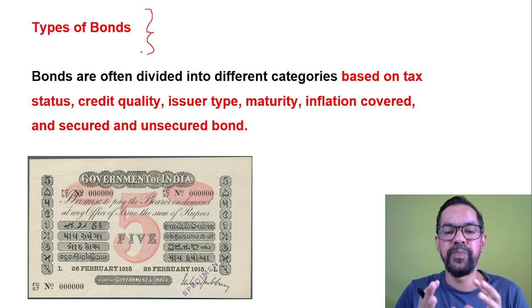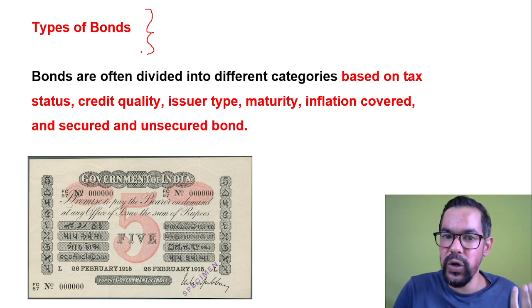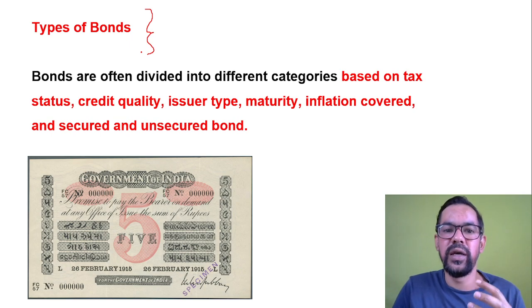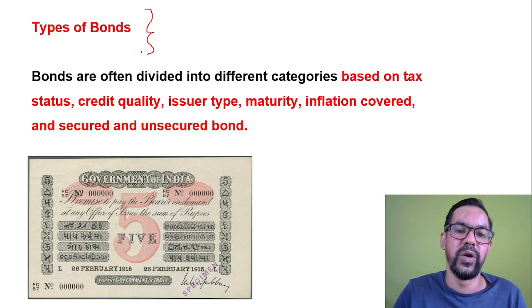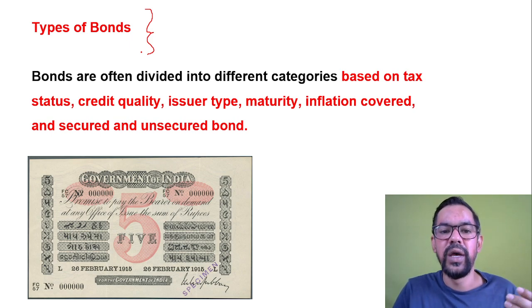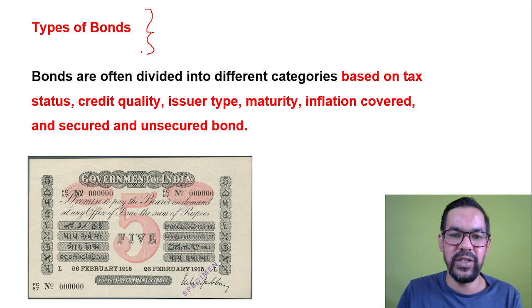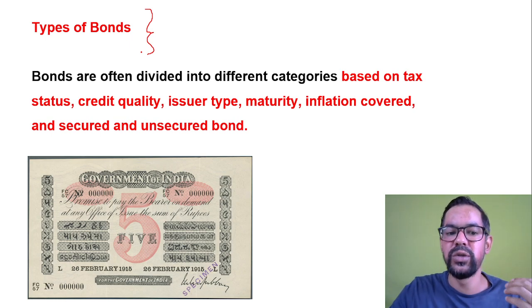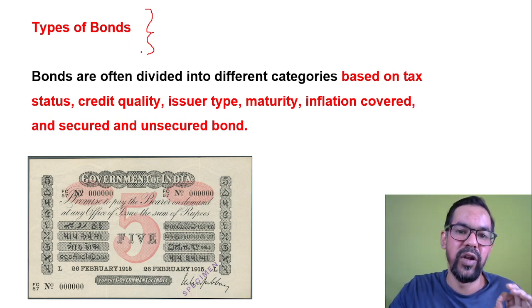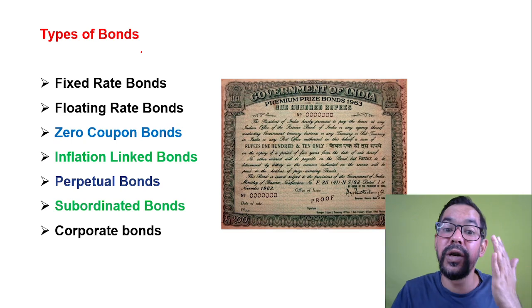Bonds are classified based on the issuer or specific features. A bond issued by a corporate house is called a corporate bond. One issued by the Government of India is a sovereign bond, like sovereign gold bonds. Municipal bonds are issued by municipal parties. You may have heard of electoral bonds, tax-free bonds, infra bonds, and green bonds — these are all different types available in the market.